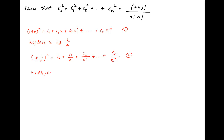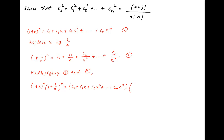Now multiplying Equations 1 and 2, we get on the left-hand side: (1 + x)^n · (1 + 1/x)^n, which equals (C0 + C1·x + C2·x² + ... + Cn·x^n) multiplied by (C0 + C1/x + C2/x² + ... + Cn/x^n).